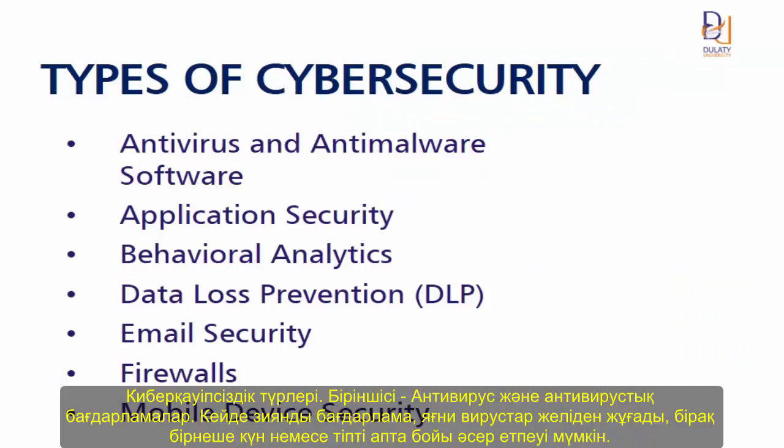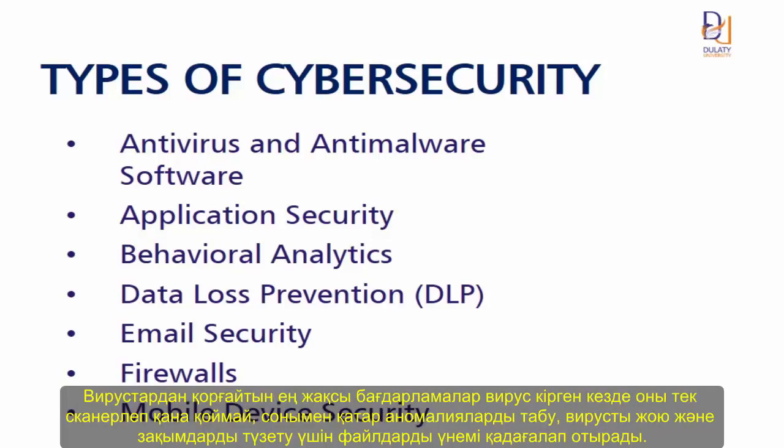The first type is antivirus and anti-malware software. Sometimes malware will infect a network but lie dormant for a day or even weeks. The best anti-malware programs not only scan for malware upon entry, but also continuously track files to find hard-to-detect anomalies, remove malware, and fix damage.